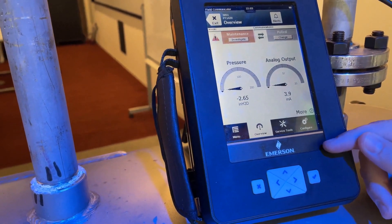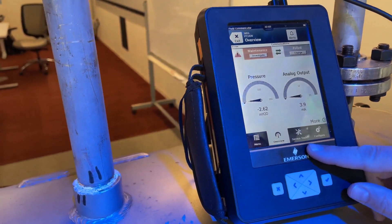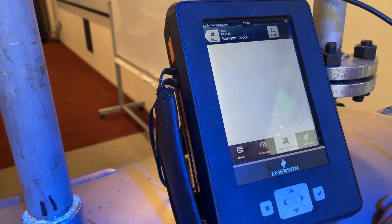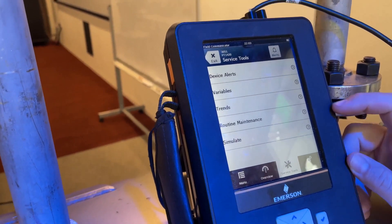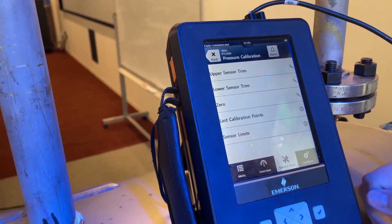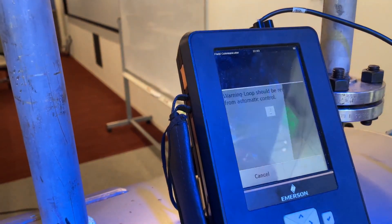So to get rid of this mounting pressure effect, we're going to perform a zero trim by going to the service tools tab, going to routine maintenance, pressure calibration, performing a zero trim.